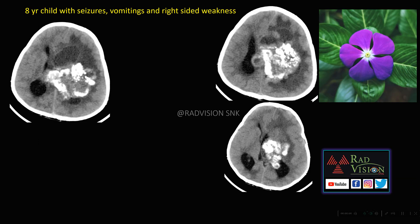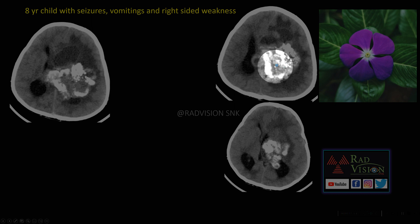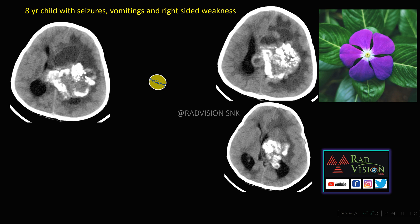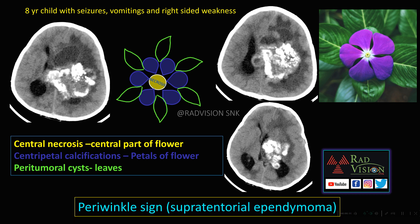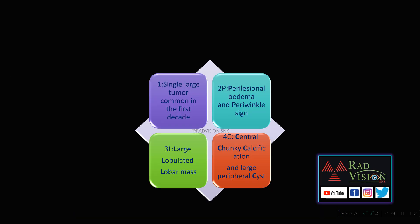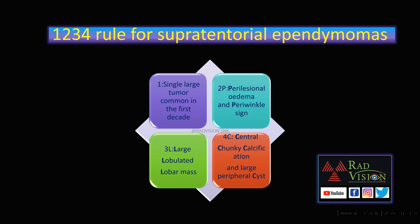Next case: an 8-year-old child with seizures, vomiting, and right-sided weakness. You can see a large calcified mass showing central necrosis surrounded by centripetal calcifications and peripheral multiple tumoral cysts with adjacent edema. This is a classical periwinkle appearance or periwinkle sign: the central necrosis represents the removed central part of the flower, centripetal calcifications resemble the petals, and peritumorous cysts mimic the leaves. This is a classical periwinkle sign in supratentorial ependymoma. Also remember the 1-2-3-4 rule for supratentorial ependymoma: 1 is single large tumor; 2 P's are perilesional edema and periwinkle sign; 3 L's are large lobulated lobar mass; 4 C's are central chunky calcifications and large peripheral cysts.